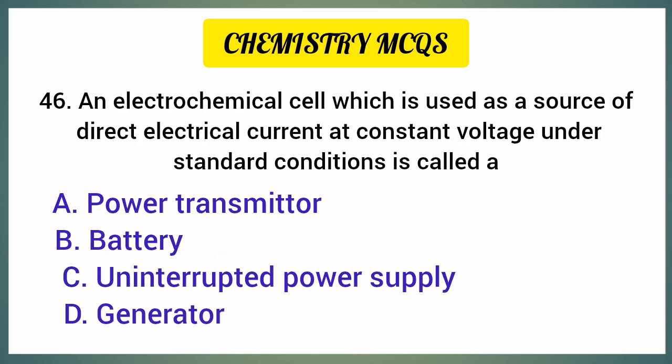An electrochemical cell which is used as a source of direct electrical current at constant voltage under standard conditions is called — correct option is option B: Battery.